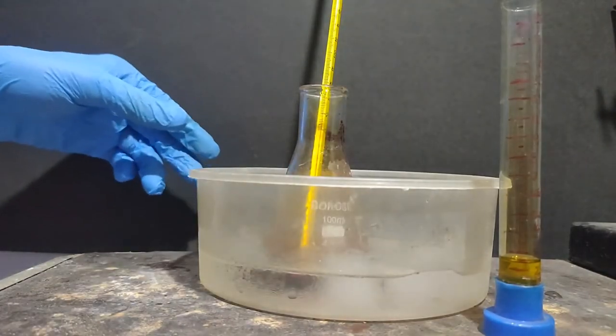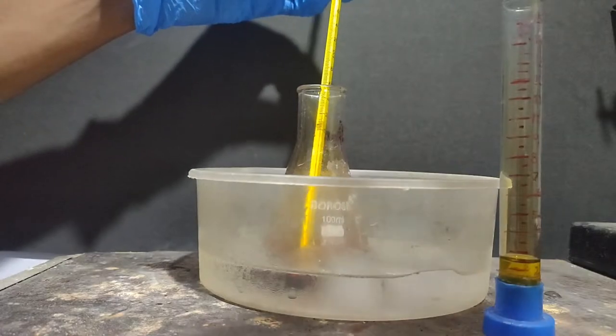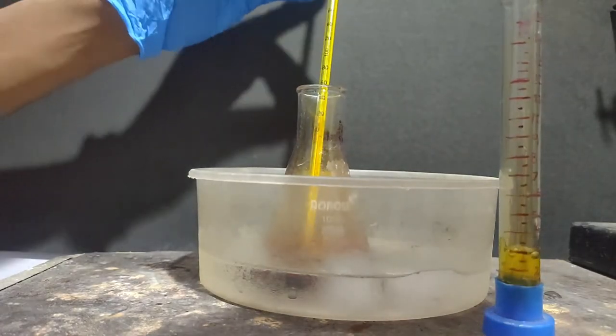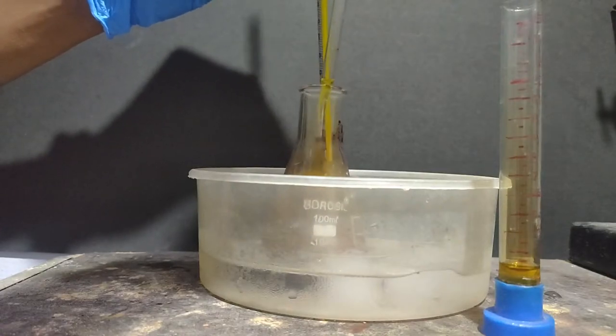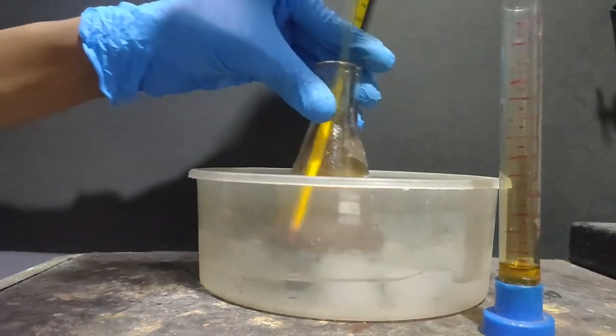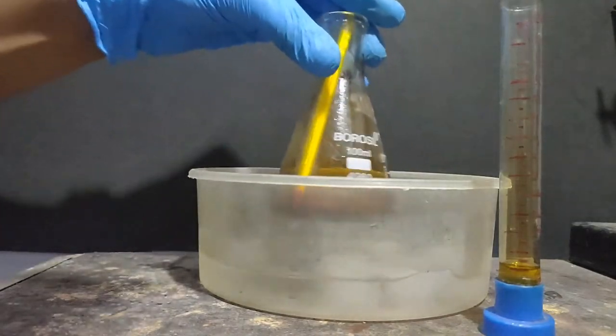Anyways, I continued the addition after evolution of brown fumes subsided. In this step, the sulfonated phenol is getting substituted with nitro group to form ortho and para nitro phenol.